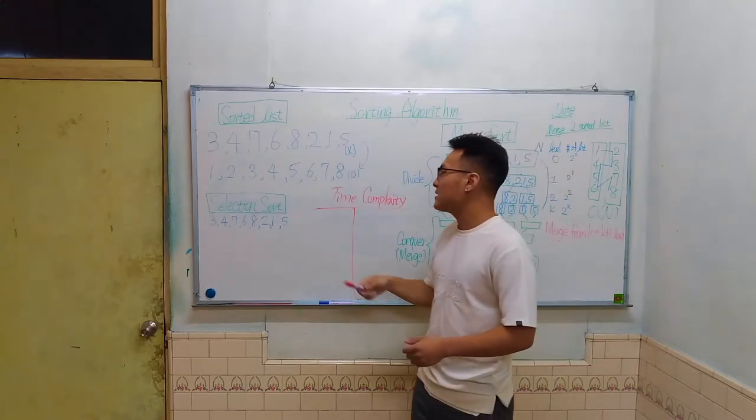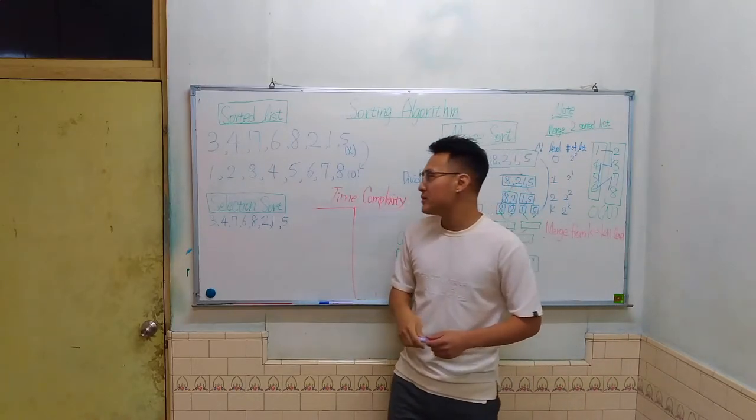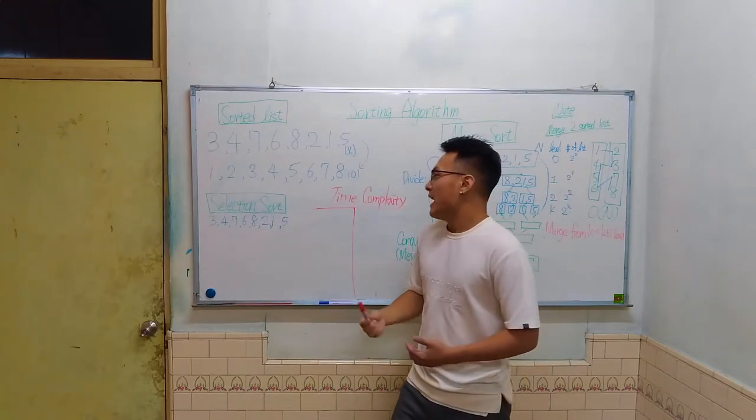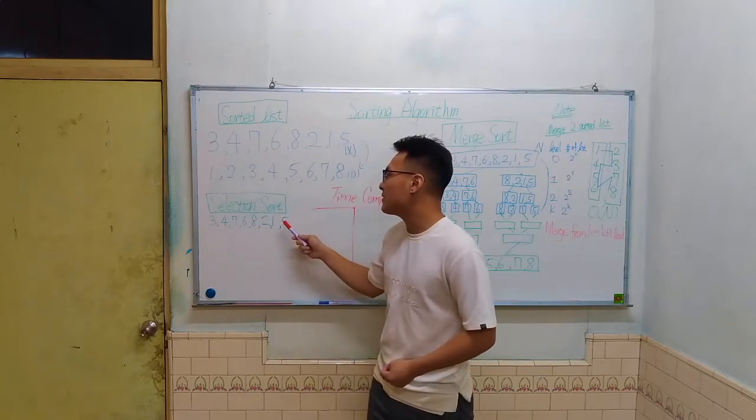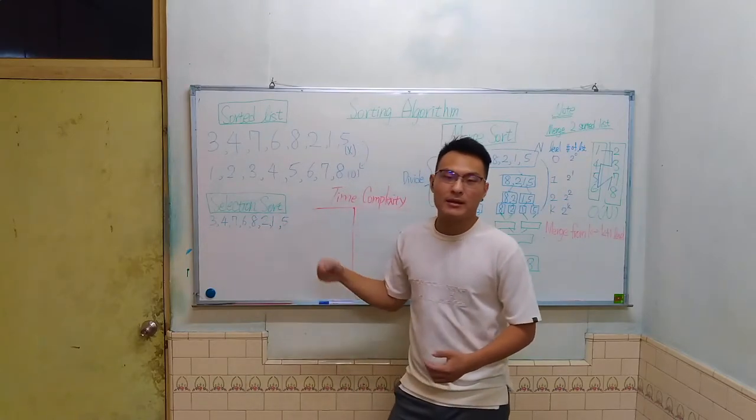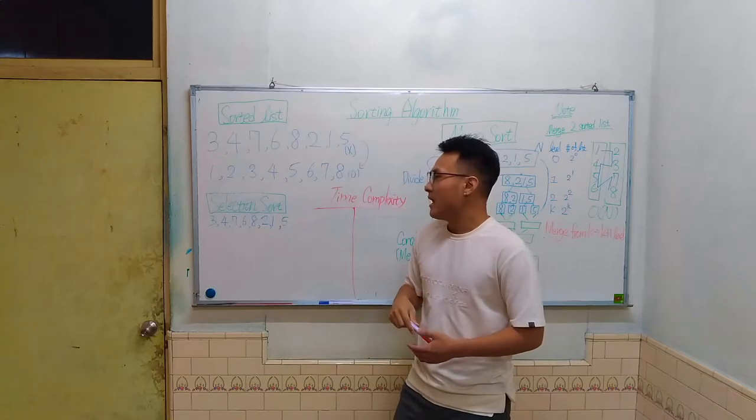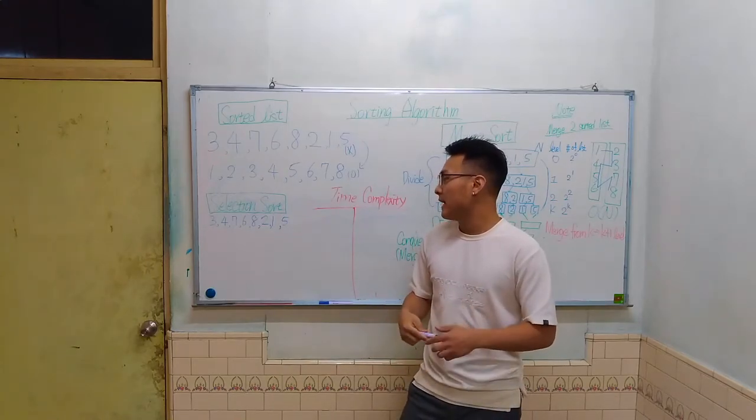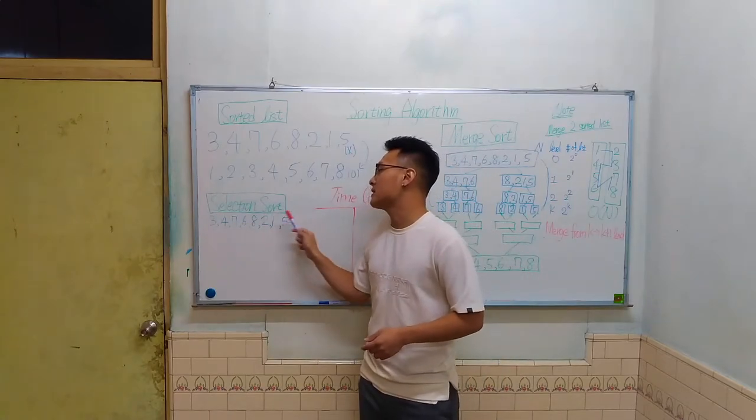So the first sorting algorithm I'm going to introduce today is selection sort. In selection sort, every time we just select the smallest element from the list and append it to a new list. And we're going to repeat this procedure again and again until the original list is empty.